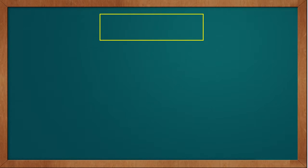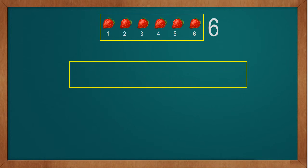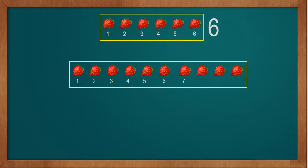Now we will see another example. We are taking the same 6 strawberries: 1, 2, 3, 4, 5, 6. Now we will take 10 strawberries: 1, 2, 3, 4, 5, 6, 7, 8, 9, and a total of 10 strawberries.